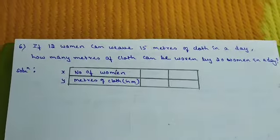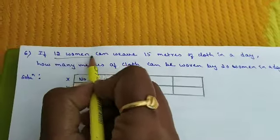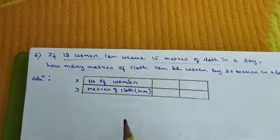So this all takes place in a day only. The two quantities are 12 women and 15 meters of cloth weave.